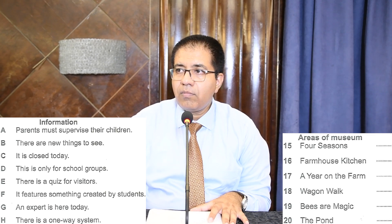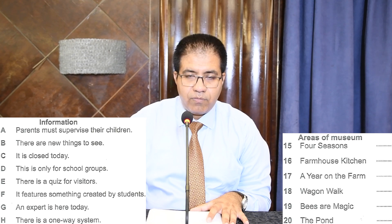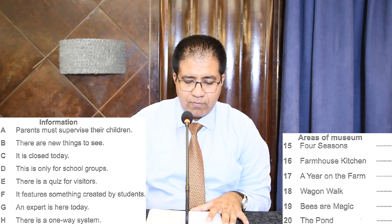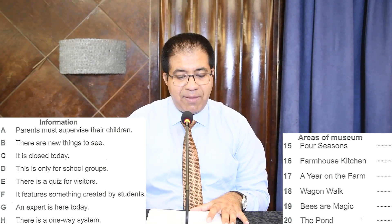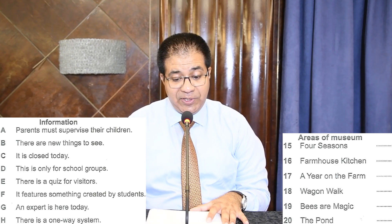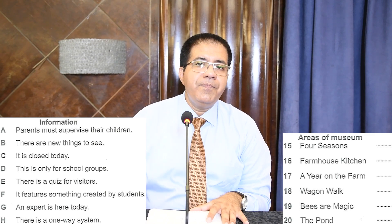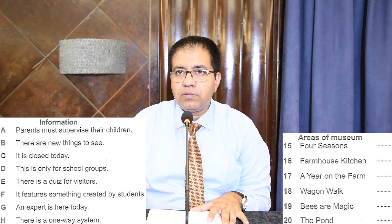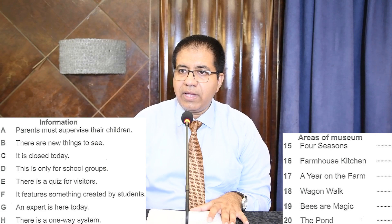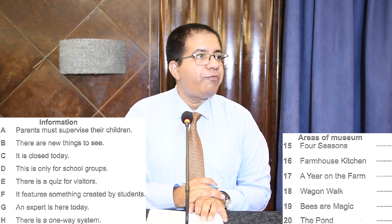[Audio clip] 'Leaving Town and Country, you enter Farmhouse Kitchen, which is self-explanatory. Here we have the oldest collection of equipment for making butter and cheese in the country, and this morning a specialist cheese maker will be giving demonstrations of how it's produced.' A specialist cheese maker is an expert here today — that is option G. Q16 Farmhouse Kitchen = G.